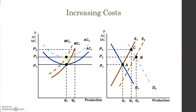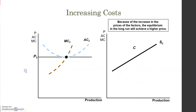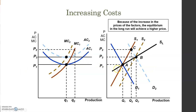At the end, the price will be P3, where the new marginal cost equals the new average cost and profits are again zero. This is the long-run equilibrium. The market settles at a greater quantity but also a higher price, so the industry supply has a positive slope.